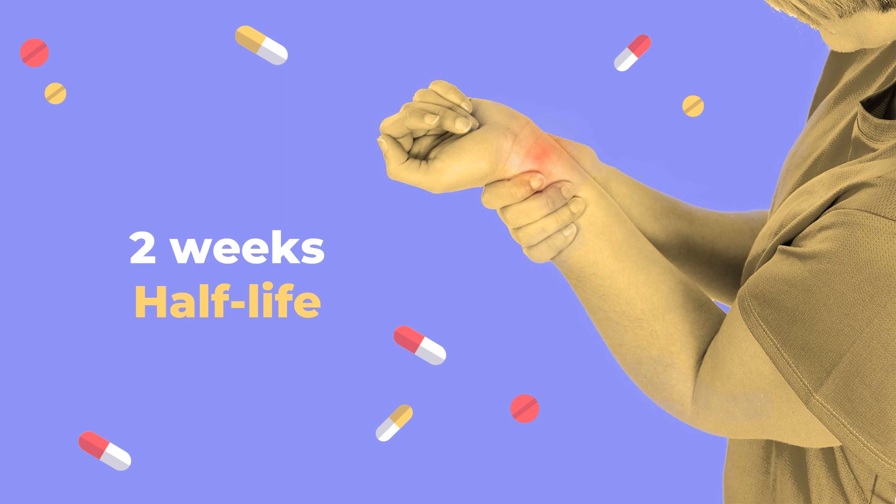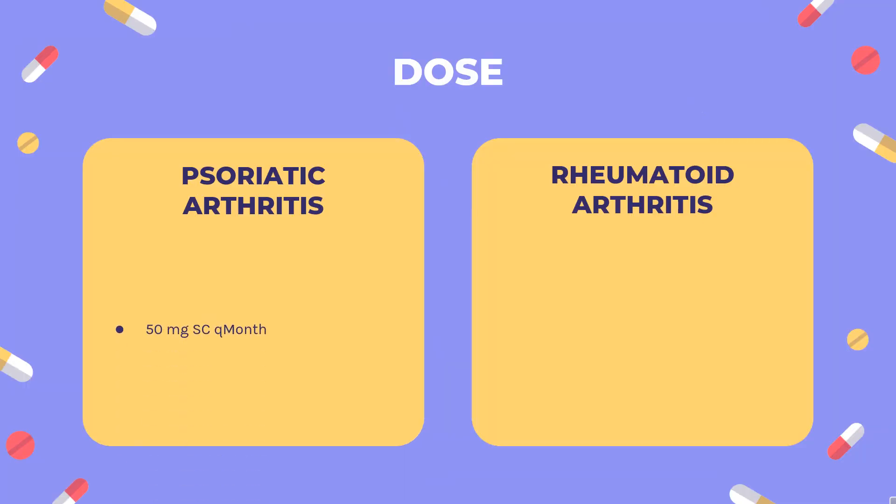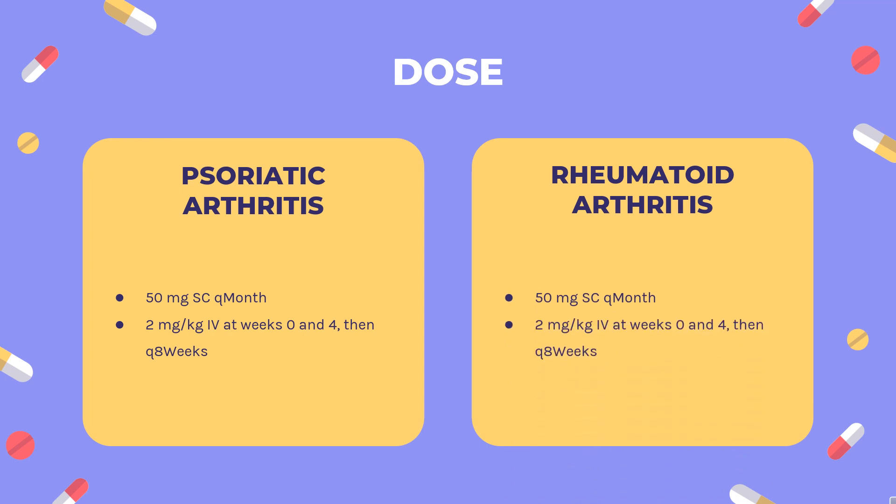Half-life: Golimumab has a long half-life of about 2 weeks. Dose — Rheumatoid arthritis: Indicated for moderately to severely active rheumatoid arthritis in combination with methotrexate. Simponi: 50 mg SC every month. Simponi Aria: 2 mg/kg IV at week 0 and 4, then every 8 weeks.